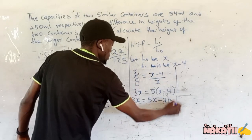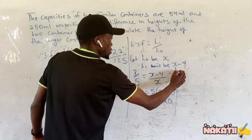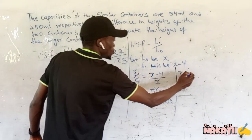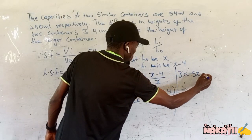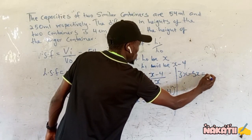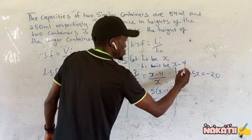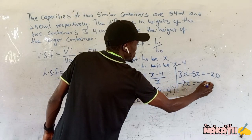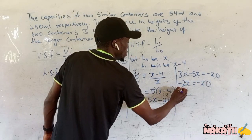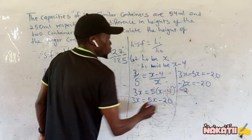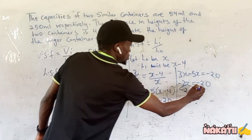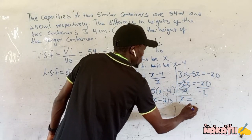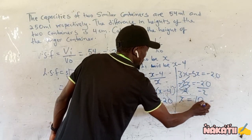Taking 5x to the other side gives us 3x minus 5x equals negative 20, which gives us negative 2x equals negative 20. Dividing both sides by negative 2, our x is equal to 10.